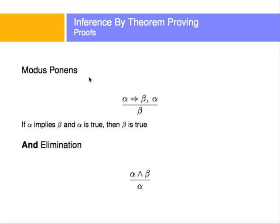Utilizing these rules, you can prove some theorems. For example, there's modus ponens: when you have alpha implies beta and you know that alpha is true, then you know beta is also true. So you can actually eliminate — if you have alpha and alpha implies beta, you can reduce this to beta only. Also, if you know that alpha AND beta is true, then both have to be true, so you can reduce this expression to simply alpha or simply beta.